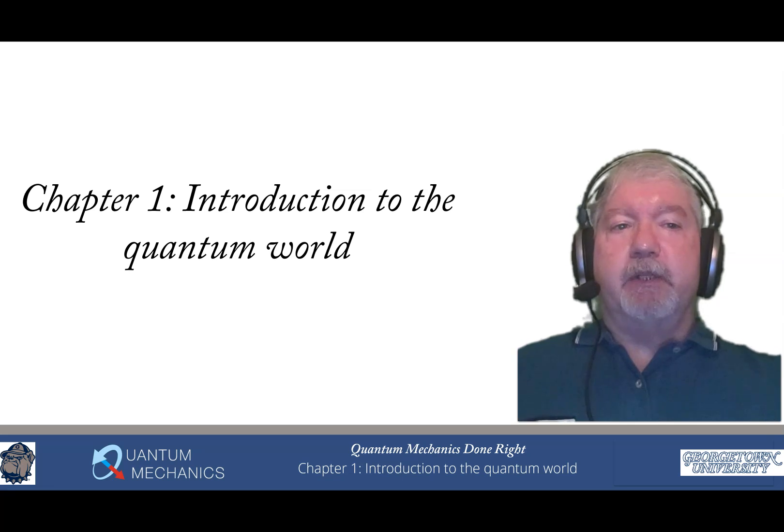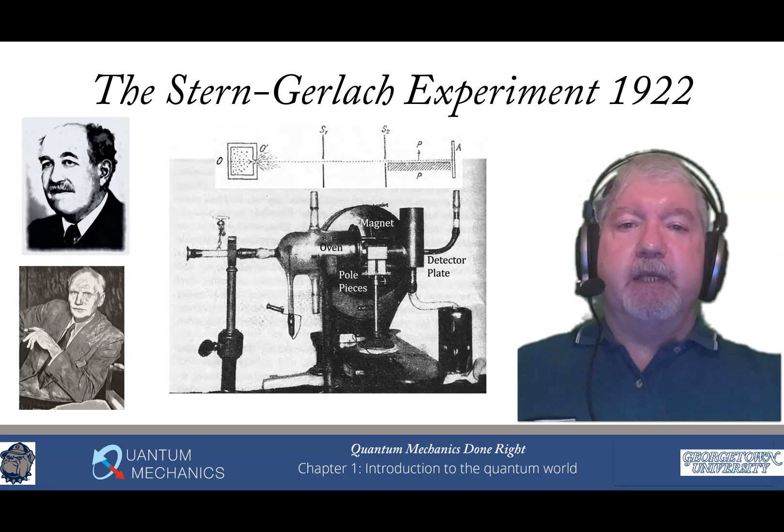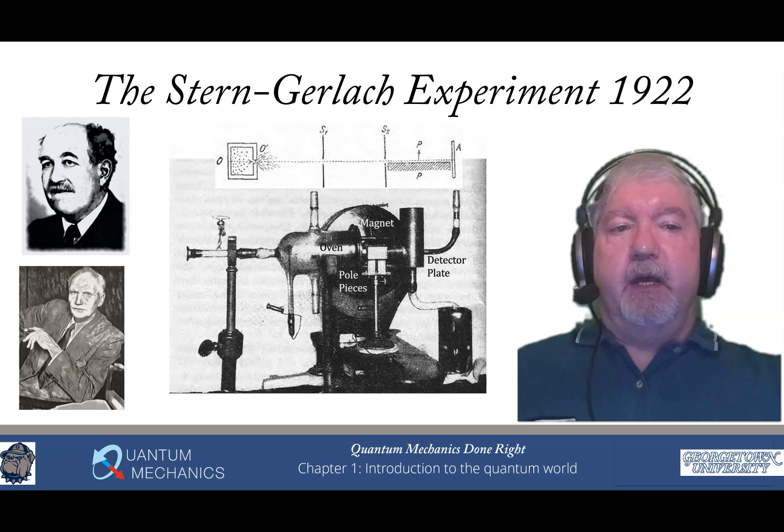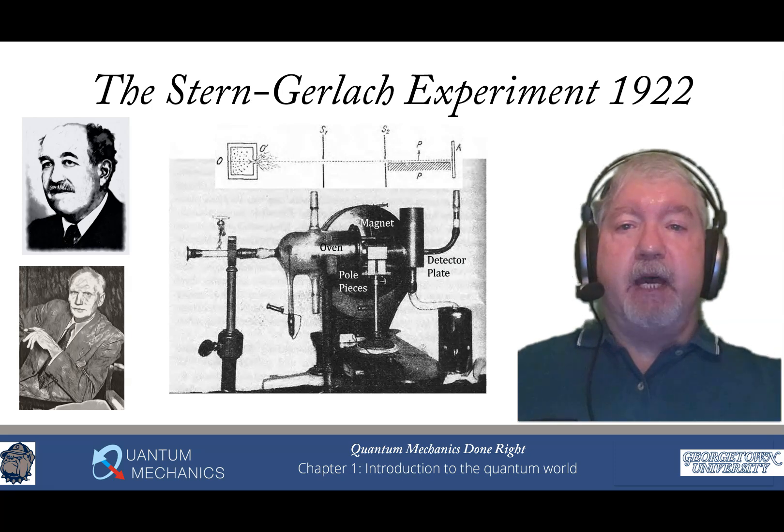So chapter one is called Introduction to the Quantum World. Here is an image of that Stern-Gerlach apparatus. This is the first apparatus to measure the spin of the electron. It was not known that that was what it was measuring at the time. You can find many very good YouTube videos that will talk about that history. I don't talk about that history very much, but it is nice to see what the initial apparatus actually looked like.